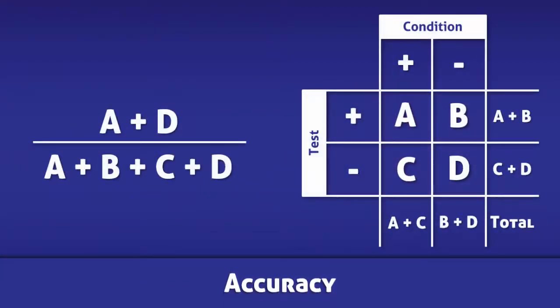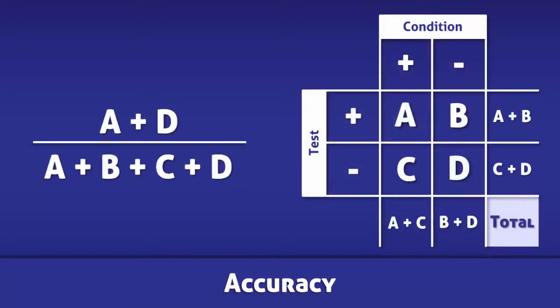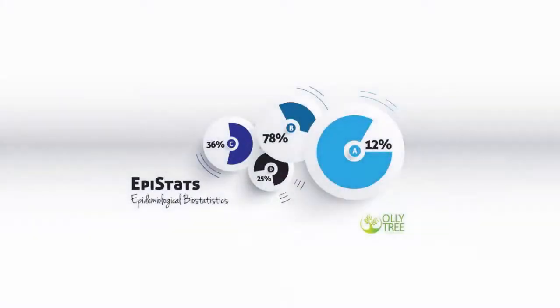Once more, the accuracy of the test is calculated by dividing the sum of the true positives and true negatives by the total number of tests.